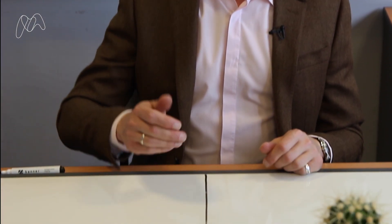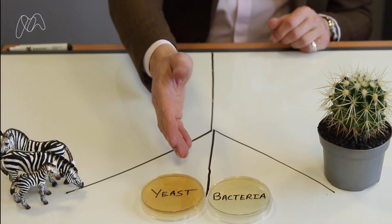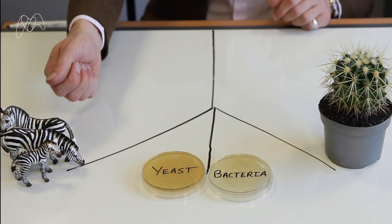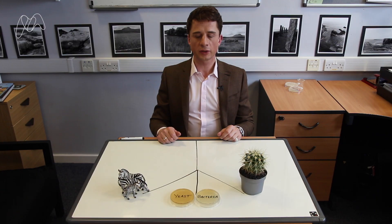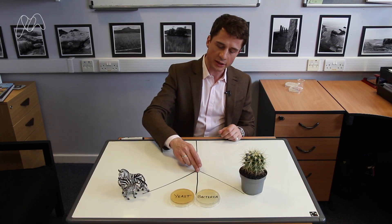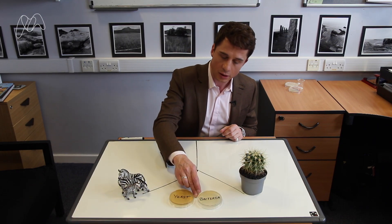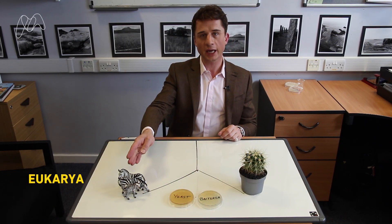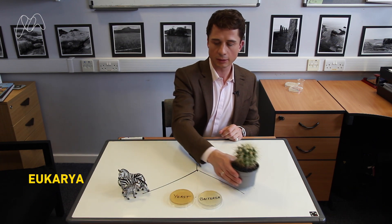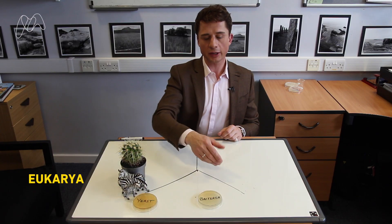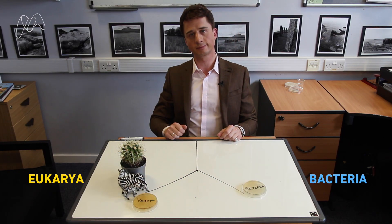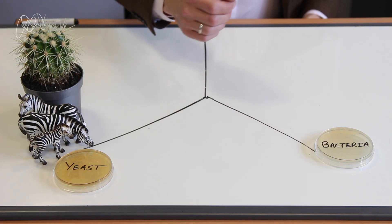Looking closely at cells under the microscope, scientists realised that some microbes, like yeast, were more closely related to animals and plants than they are to bacteria. So in the 1960s, scientists proposed that life should be separated into just two groups. On one branch was the domain Eukarya, which includes animals, plants, and fungi, and the other domain were the bacteria — implying that millions of years ago, life diverged into these two groups, and each branch took its own evolutionary journey.